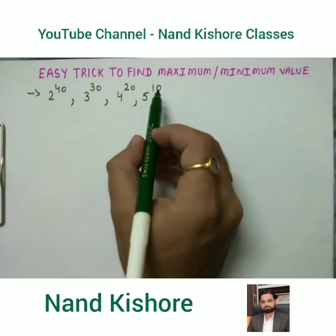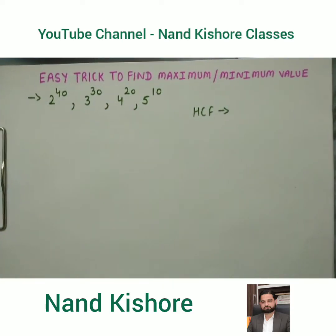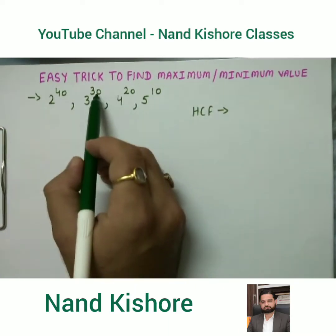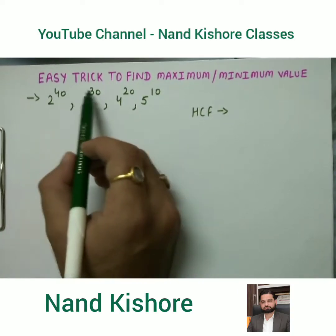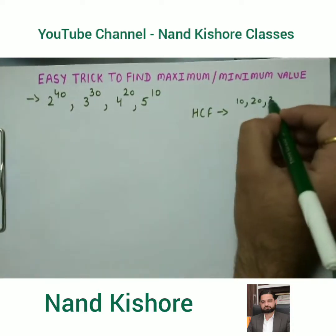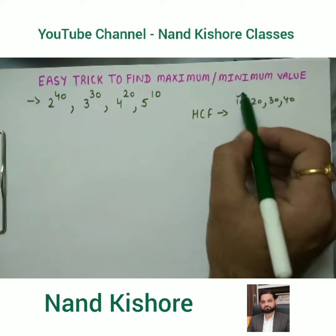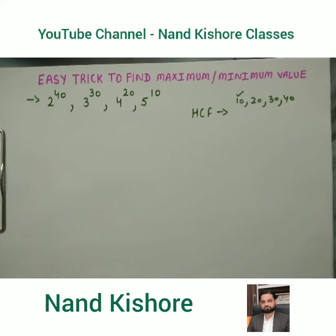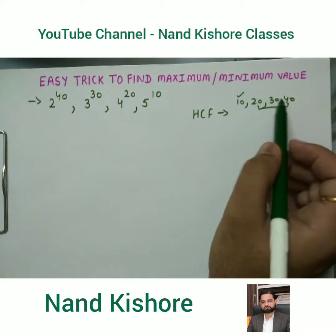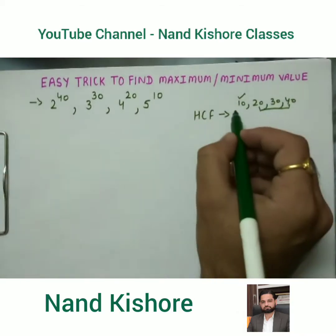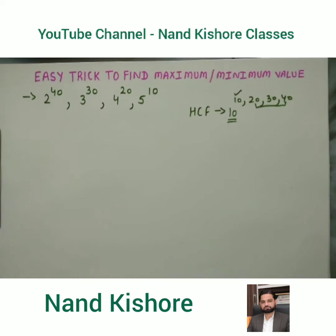Our first step is to find the HCF of the powers: 10, 20, 30, and 40. There is a shortcut to find HCF as well — check the lowest value, which is 10. Then check whether the other three values appear in the multiplication table of 10. Since 10×2=20, 10×3=30, and 10×4=40, all values are in the table of 10. So HCF is 10.